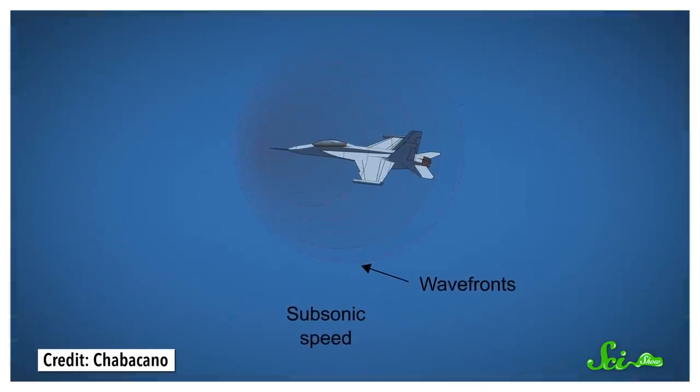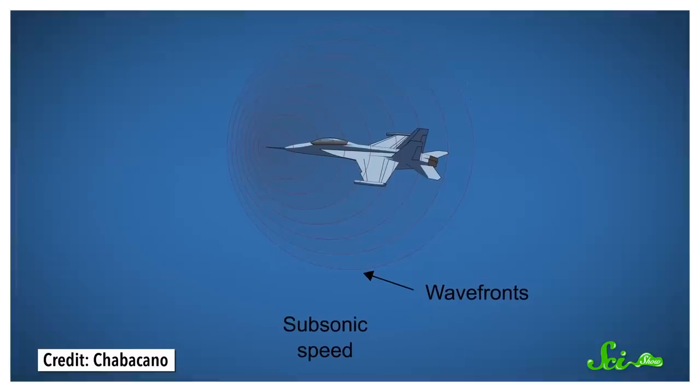Essentially, it's just how fast information, like that a plane is coming, can get passed between groups of air molecules. When a plane is going slowly, molecules can push each other out of the way long before the aircraft gets to them.